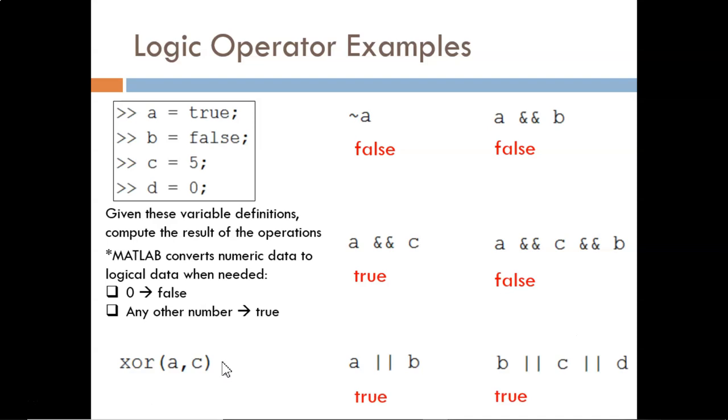Finally, EXCLUSIVE OR requires one and only one input to be TRUE in order for the output to be TRUE. Here, we pass in two TRUE inputs. As a result, the output is FALSE.